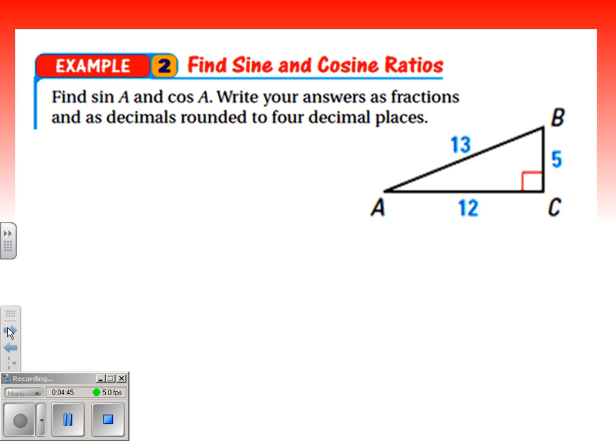Example two says find sine of A and cosine of A. Write the answers as fractions. And then here again, when we're doing trig ratios, we want those ratios to be very, very accurate, so we're going to round to four decimal places. The triangle doesn't indicate what angle I'm looking for, I'm going to fill that in. I like to do that whenever I'm doing one of these problems, just to keep myself kind of oriented. Sine of angle A, that's opposite 5 over hypotenuse 13. And it's already simplified.